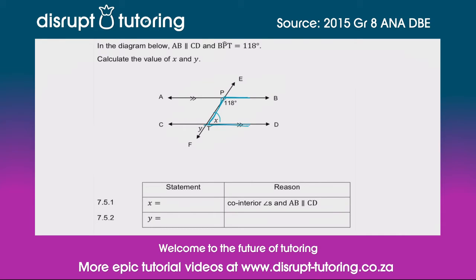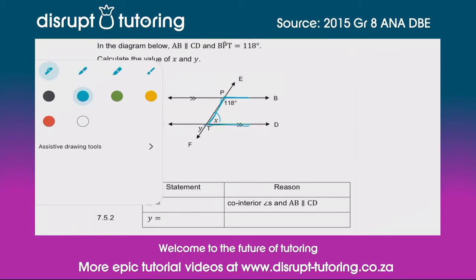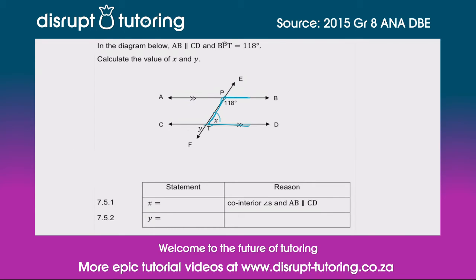What's interesting about this U is it's formed by those two parallel lines, and then the line cuts through those parallel lines — which is called the transversal, by the way, though that's not too important. Now, what do we know about this rule?